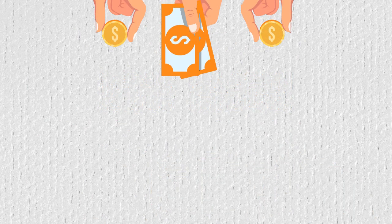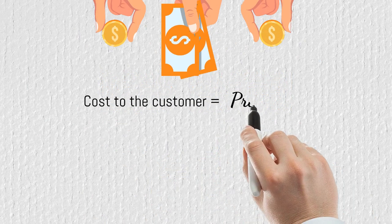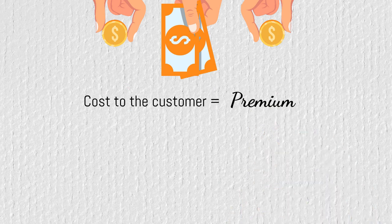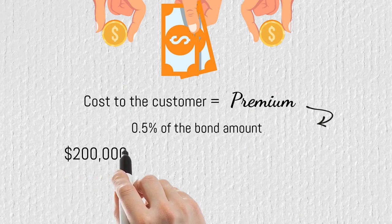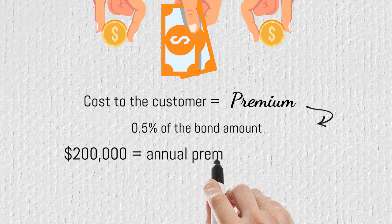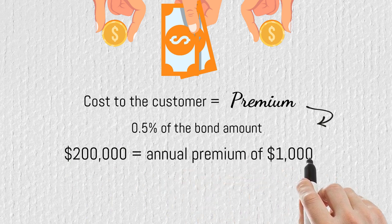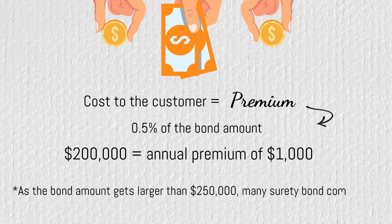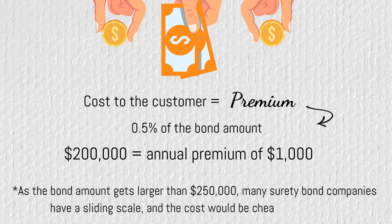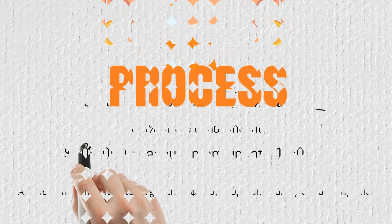The probate bond cost to the customer, also known as the premium, will depend on many factors. Typically, the premium is roughly 0.5% of the bond amount. For example, a $200,000 probate bond will usually have an annual premium of $1,000. However, as the bond amount gets larger than $250,000, many surety bond companies have a sliding scale and the cost would be cheaper than 0.5%.